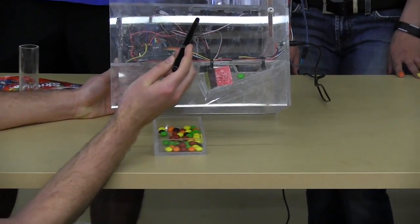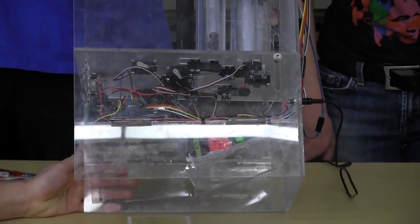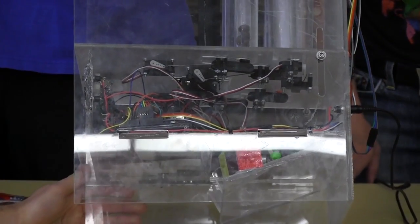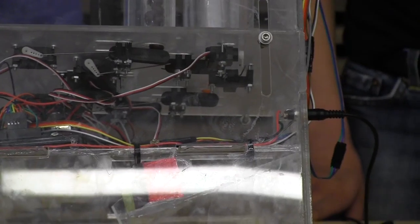We also 3D printed these little mounts that can hold the trap door in place where we want it to. And then just a light sweep by the servo will pull that door back and let all the Skittles fall out for that color.